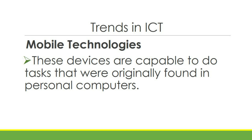Mobile technologies. These devices are capable of doing tasks originally found in personal computers. There are different types of phones: basic phones are used for calling and texting; feature phones also do that but additionally have internet access and games like Snake; and smartphones allow us to do tasks originally from computers because we can install software and applications on them.